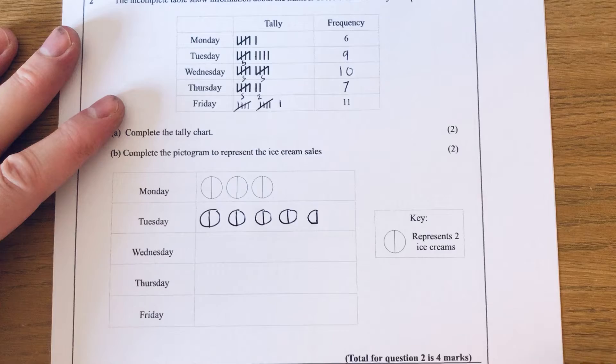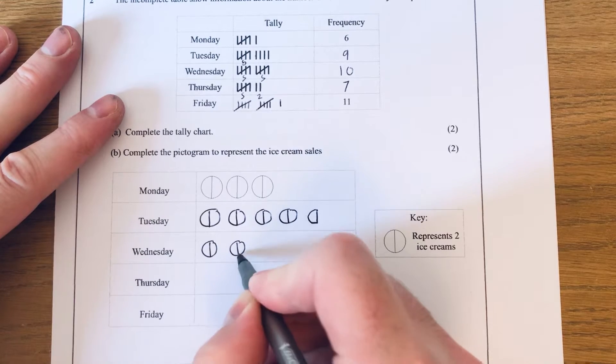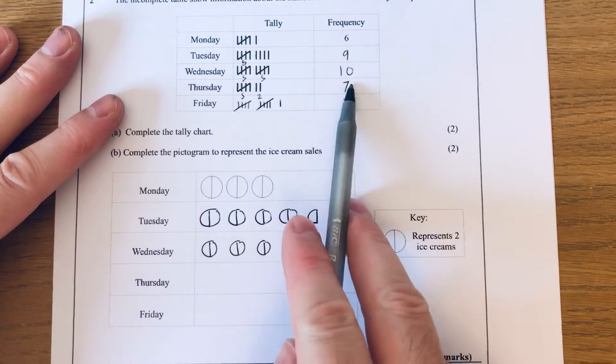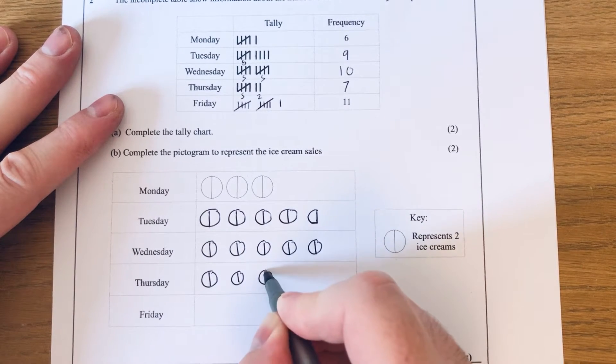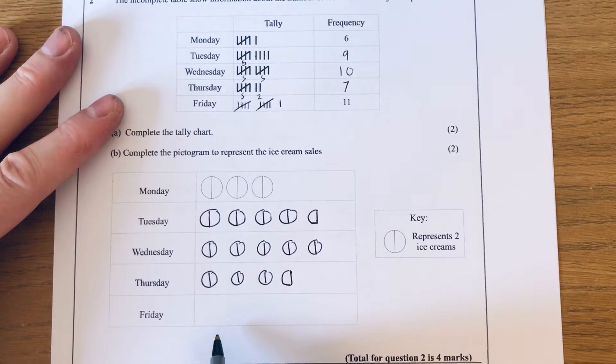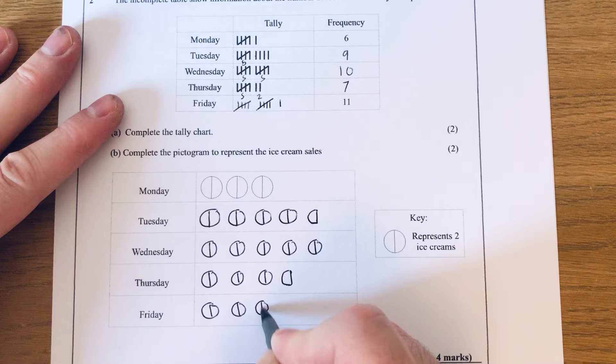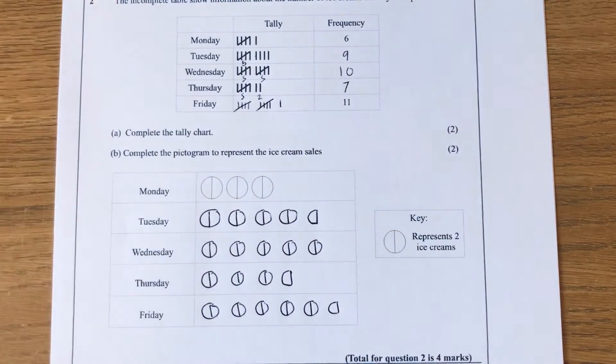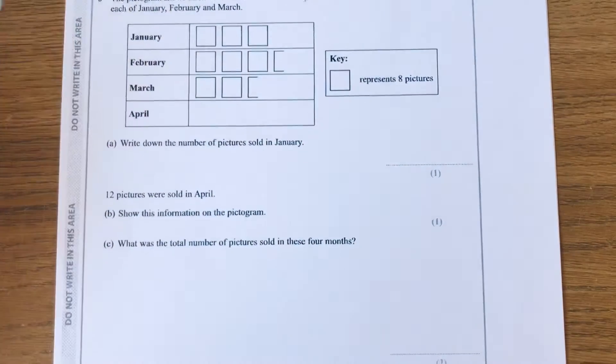Wednesday we've got ten, so two, four, six, eight, ten. Thursday we've got seven, so two, four, six, and then we just need to do half to make it seven. And Friday we've got eleven, so two, four, six, eight, ten, and an extra half. That's our first question done.